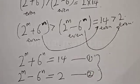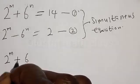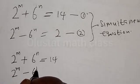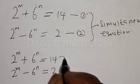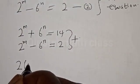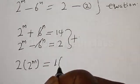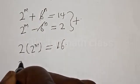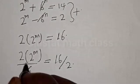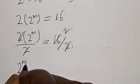Now let's solve using the elimination method. Adding equation 1 and equation 2 together: (2^m + 6^n) + (2^m − 6^n) = 14 + 2. The 6^n terms cancel, giving 2 × 2^m = 16, so 2^m = 16 ÷ 2 = 8.